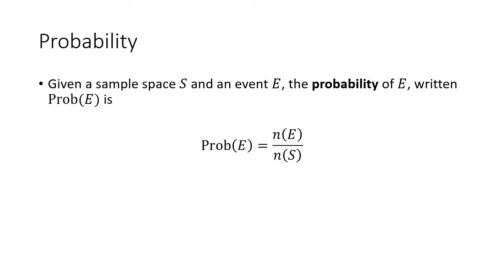So we have this formula for probability: we count up the number of things in the event, we count up the number of things in the sample space, we create that fraction, and that fraction is going to be our probability. So let's work through some sample problems.